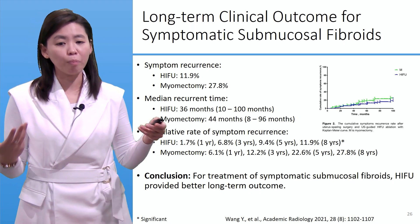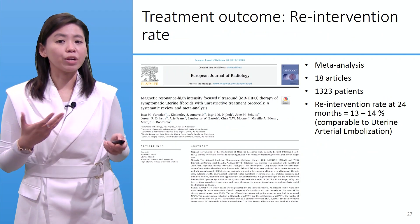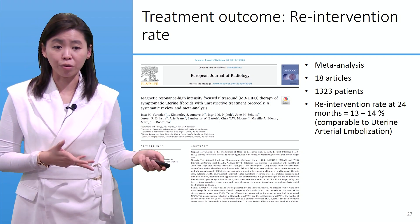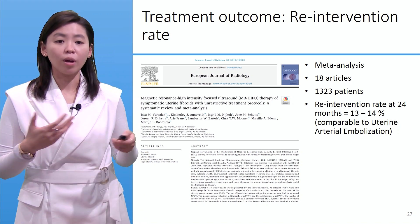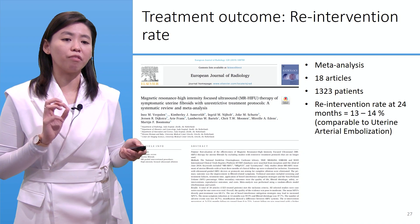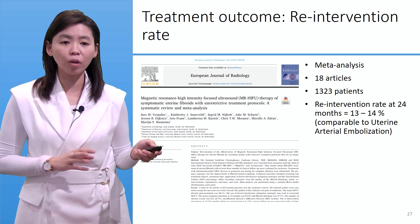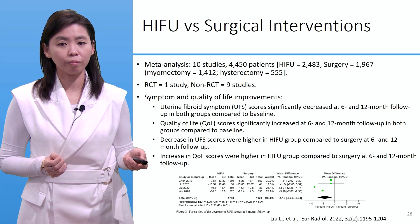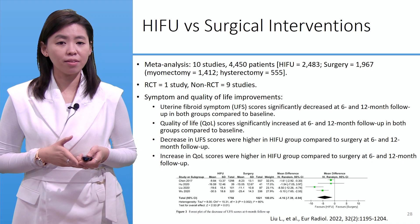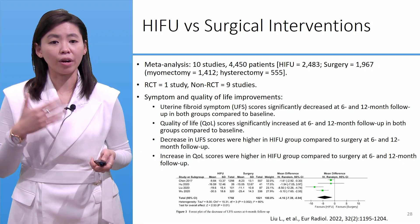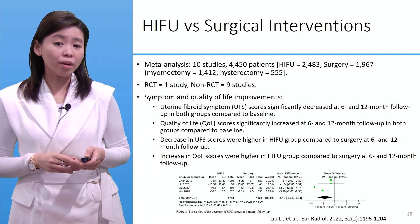Looking at re-intervention rate between HIFU and uterine arterial embolization (UAE): this meta-analysis compared 18 articles with 1,323 patients and showed that the re-intervention rate at 24 months is about 13.14% for HIFU, which is comparable to UAE. A second meta-analysis of 10 studies with approximately 4,450 patients compared HIFU to myomectomy and hysterectomy, including one RCT and nine non-RCT studies.